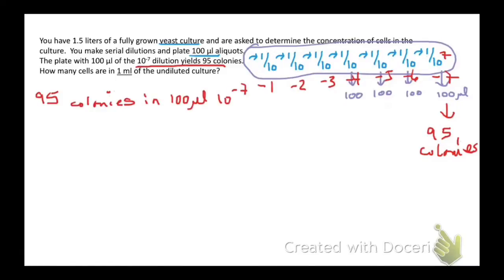If you had 95 colonies in 100 microliters, you would have 950 colonies in 1 mil. And that's what we're looking for ultimately, but we're still at 10 to the minus 7.